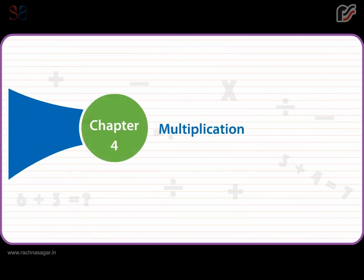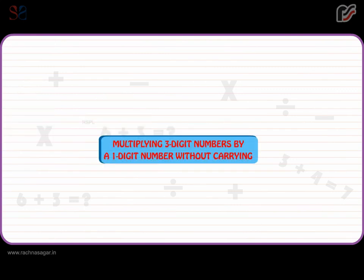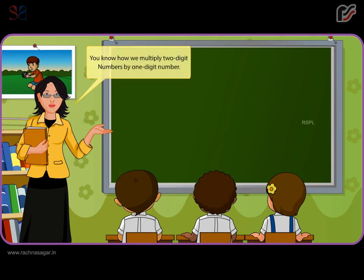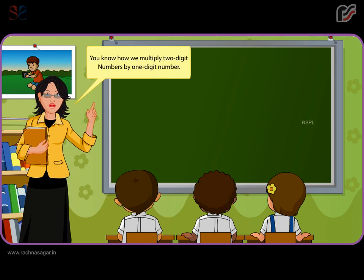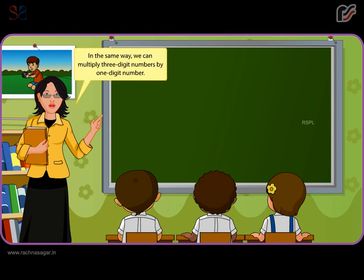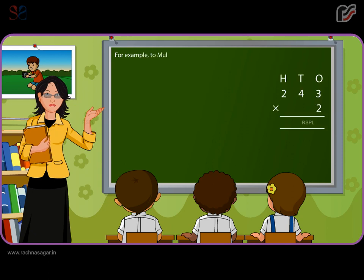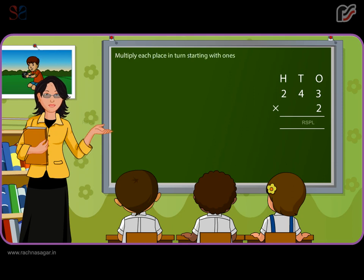Chapter 4: Multiplication. Multiplying three-digit numbers by a one-digit number without carrying. Just as we multiply two-digit numbers by a one-digit number, in the same way we can multiply three-digit numbers by a one-digit number. For example, to multiply 243 by 2, multiply each place in turn starting with the ones place.